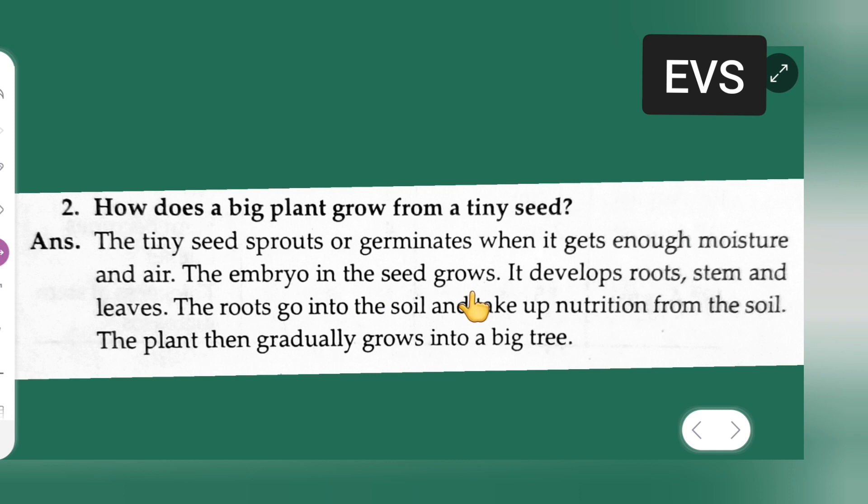It develops roots, stem, and leaves. The roots go into the soil and take up nutrition from the soil. The plant then gradually grows into a big tree.